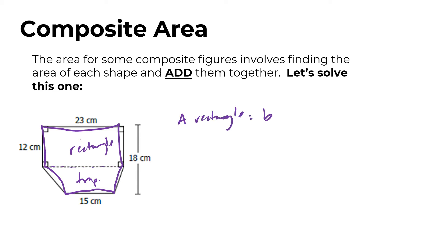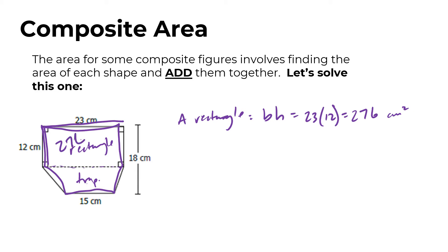For the area of the rectangle, we do base times height. The 23 and the 12 are the sides we'll use — base is 23, height is 12. Multiplying those together, the area of the rectangle is 276 square centimeters.